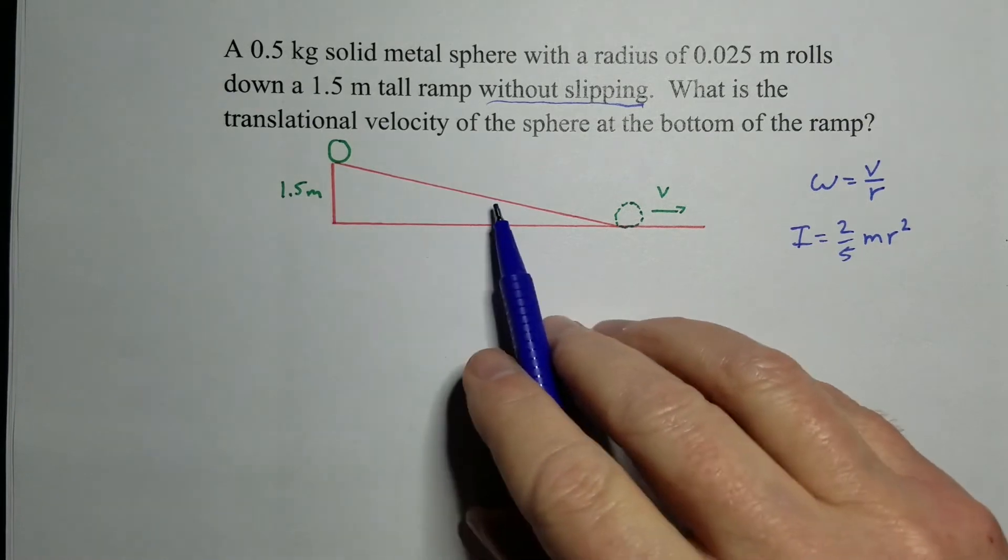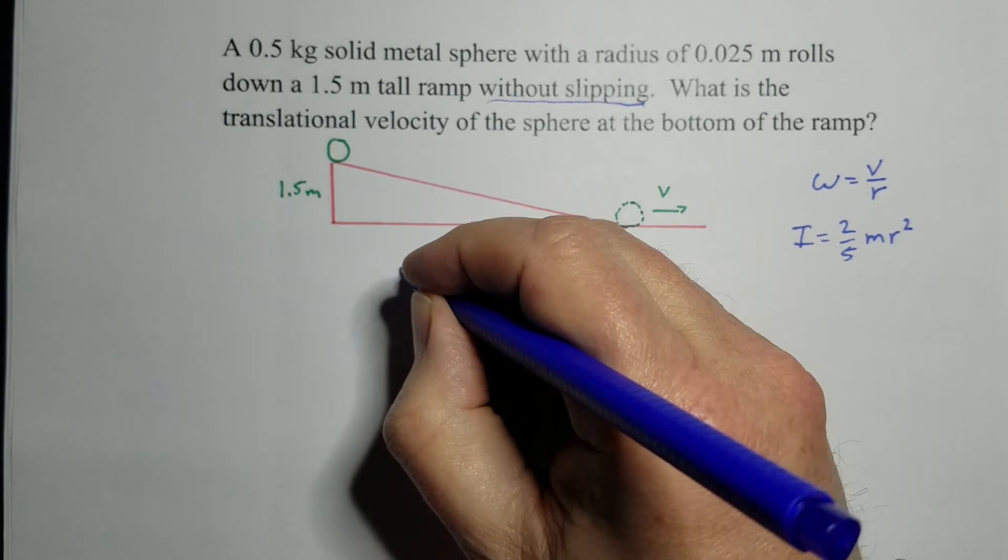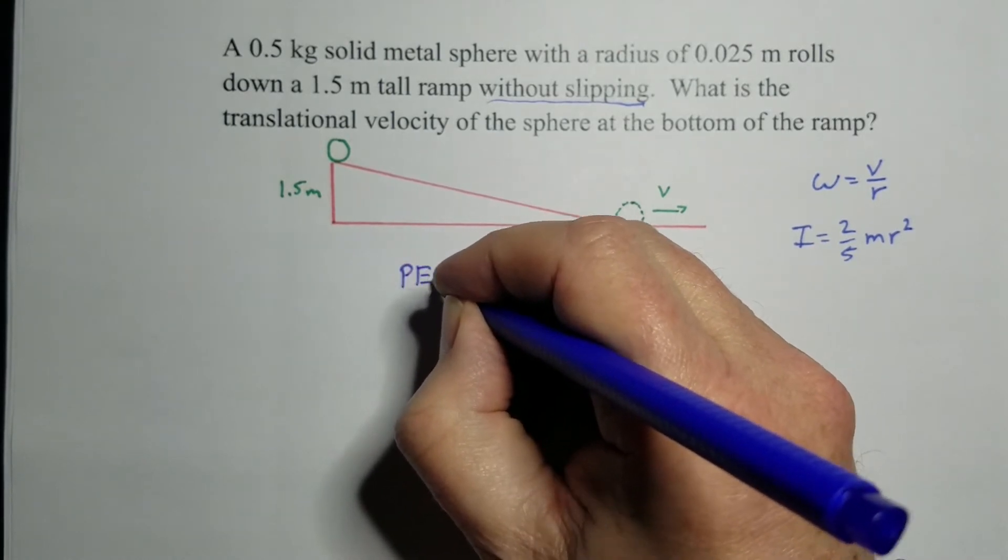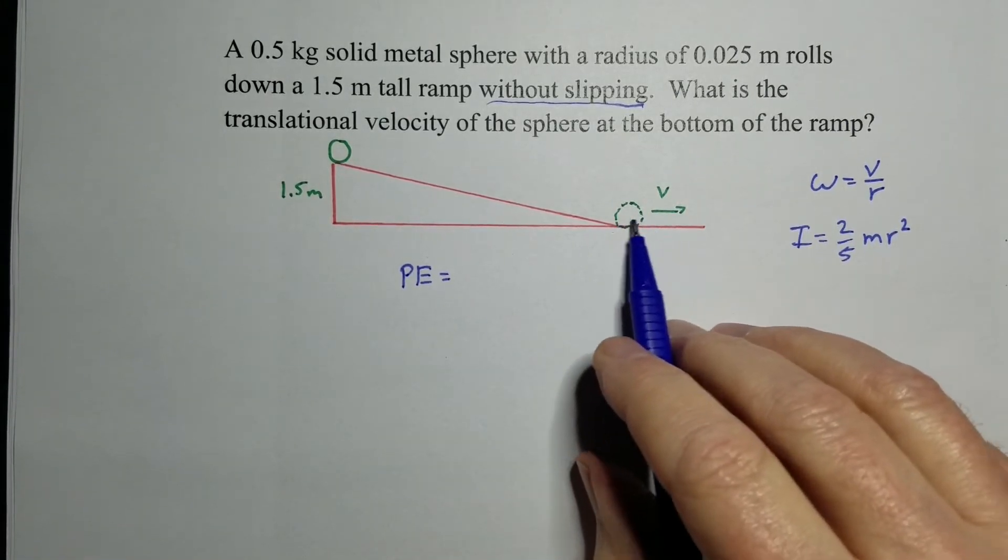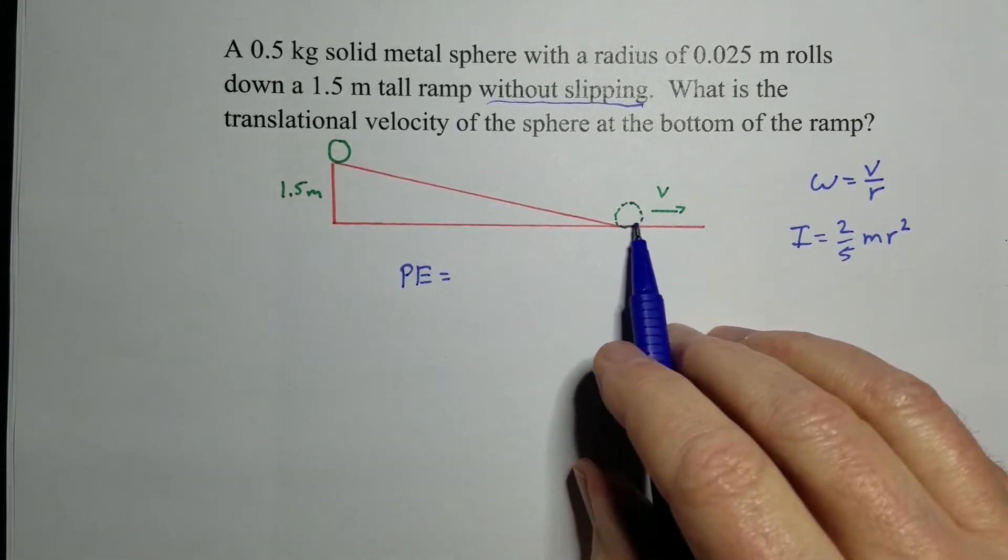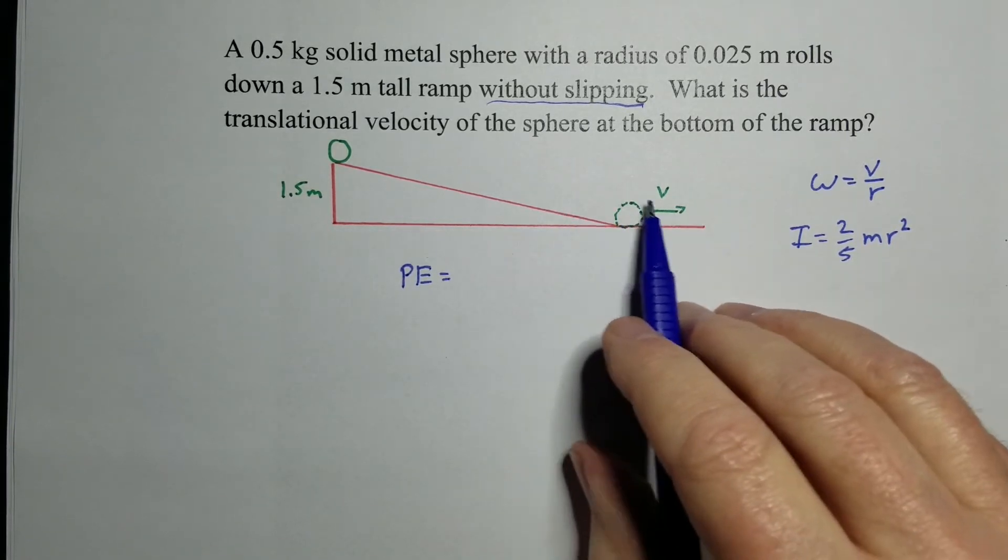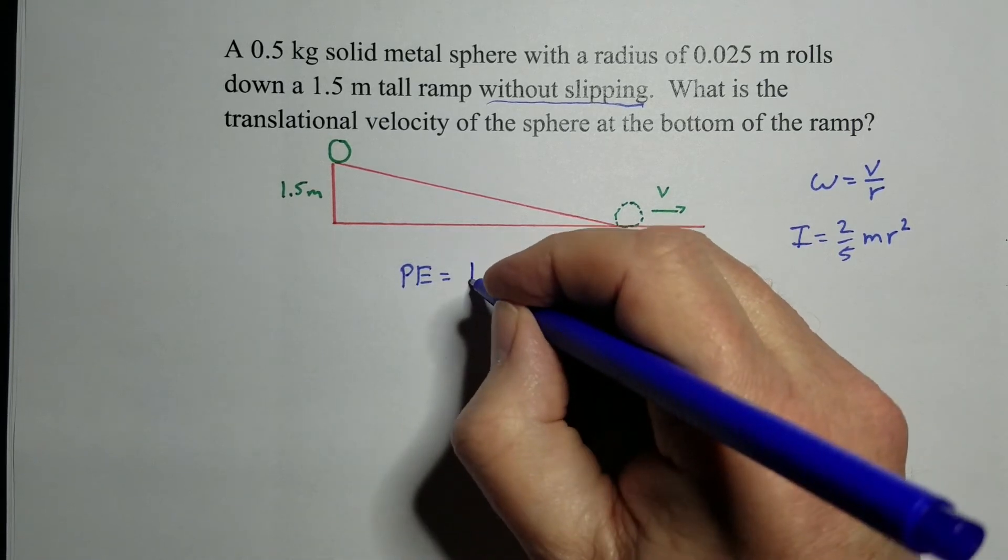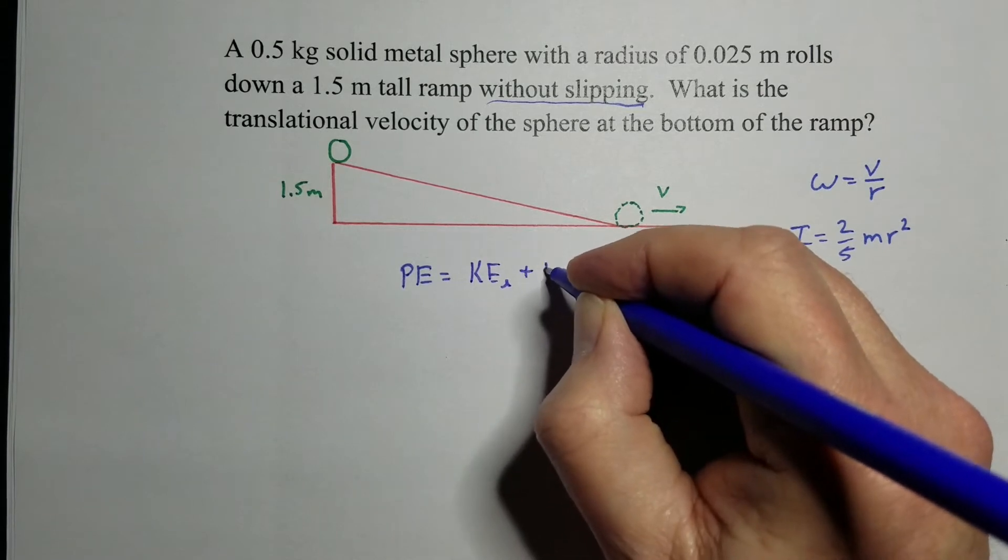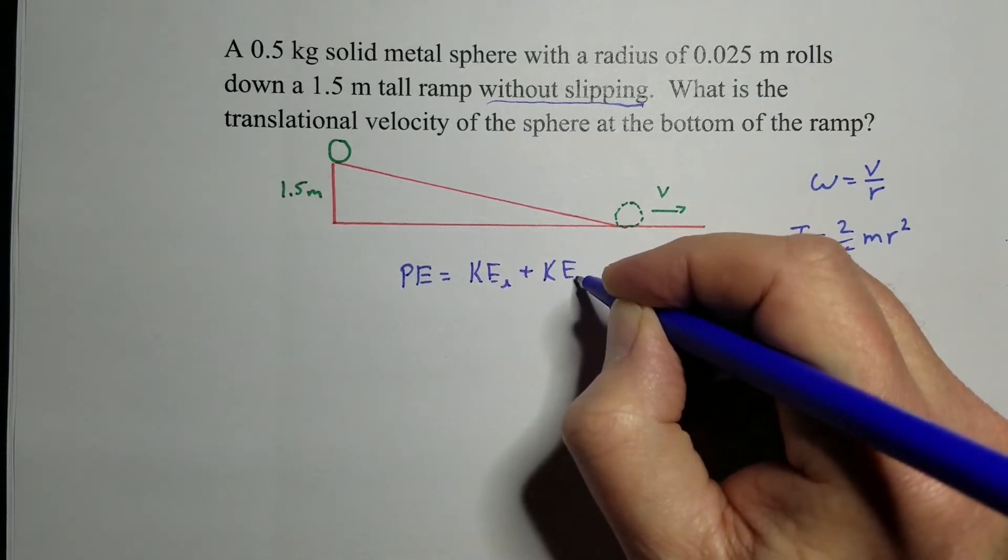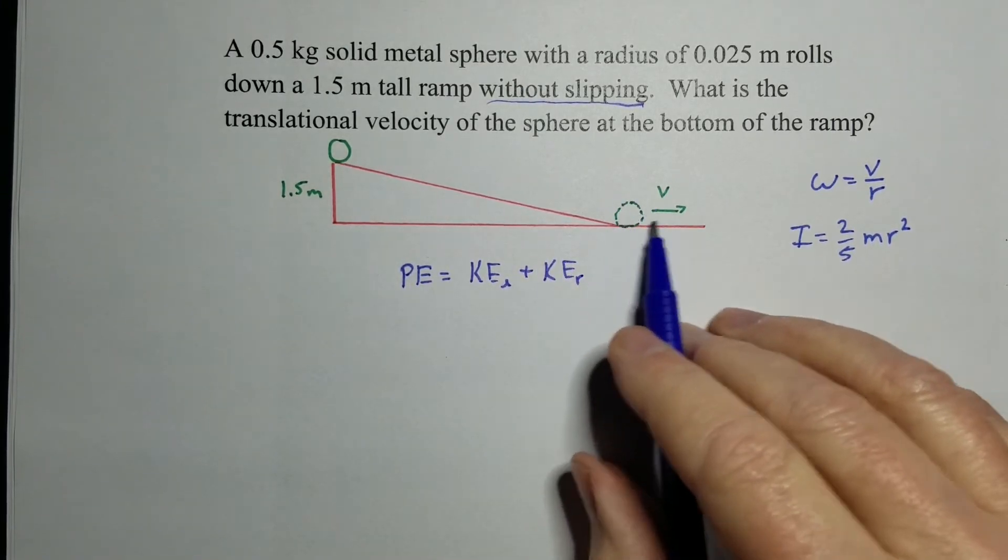So we're going to first solve this out with the numbers given to actually figure out the velocity there. So this is basically a conservation of energy problem, where we have the energy at the top, and the energy at the top is all potential energy. Well, at the bottom, we actually have two types. There's no more potential energy because it's at the bottom, at its lowest point. But it has kinetic energy from it moving as well as spinning.